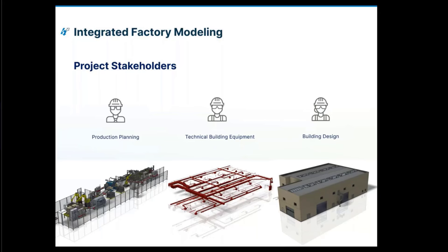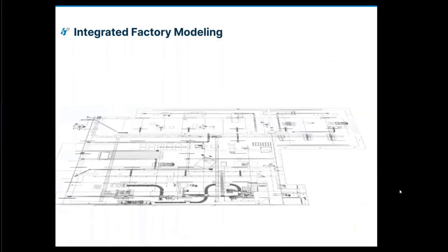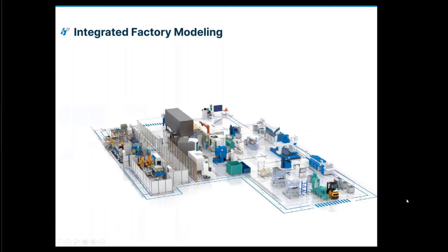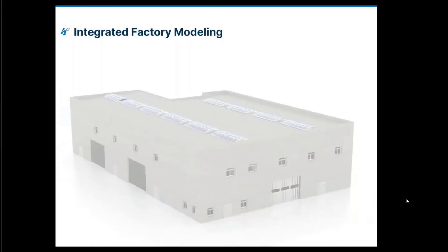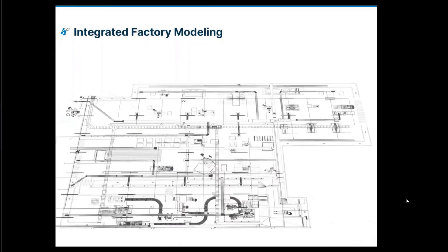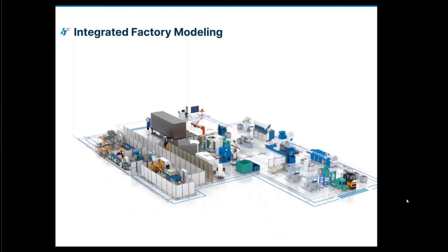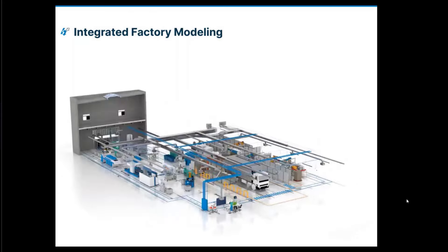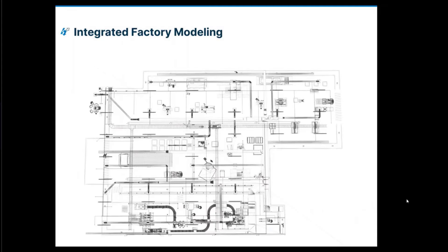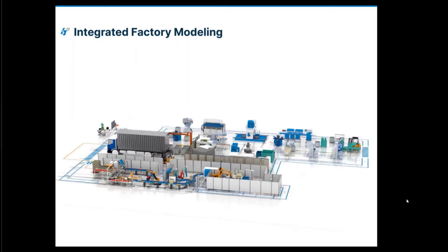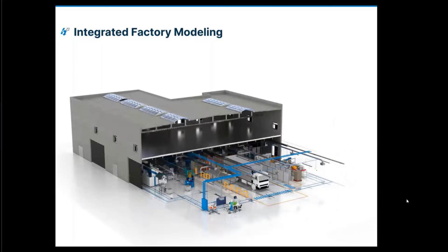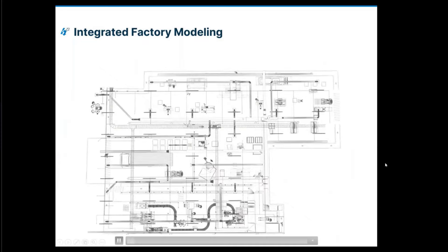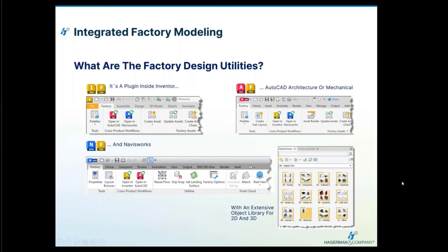Inside each of those areas we have different components, different departments, different silos that we could bring together and provide more information to. The process of going from classic 2D AutoCAD layout to the 3D side — whether it's Revit, Inventor, or Plant 3D — if we can integrate the MEP data, piping, conveyor runs, sprinkler head systems into one envelope, that is the aim of integrated factory modeling: bringing all silos together under one roof and sharing data.